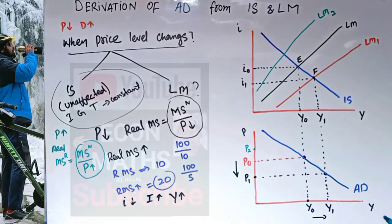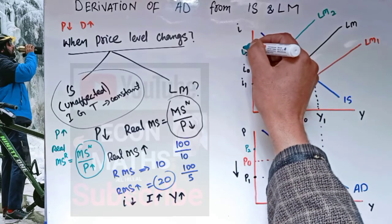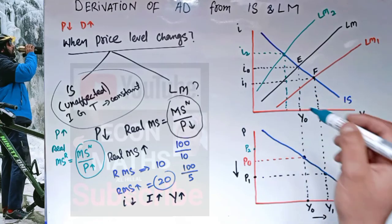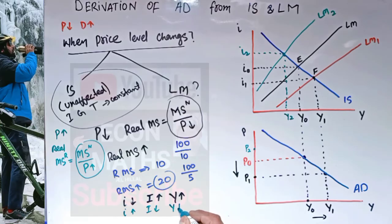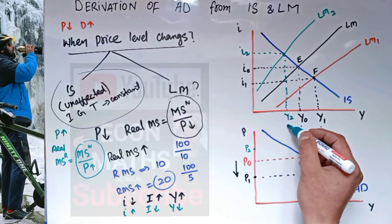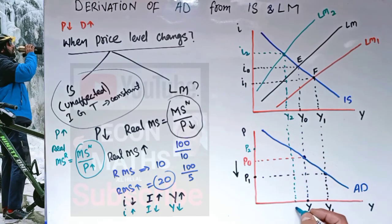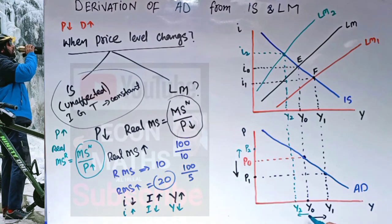The new equilibrium is at a higher interest rate i₂ and a lower output level Y₂. When interest rate increases, investment decreases, and therefore output level decreases from Y₀ to Y₂. When we plot this: price increased from P₀ to P₂ and output fell from Y₀ to Y₂. Taking this point on the graph, we again get a downward sloping aggregate demand curve. I hope I made myself clear in this video — thank you.